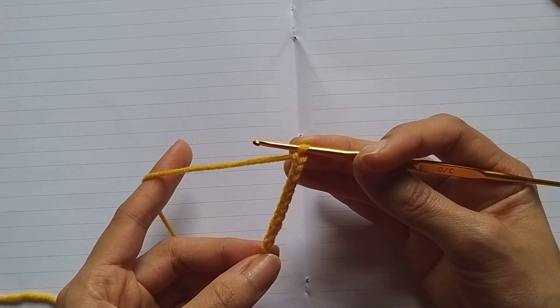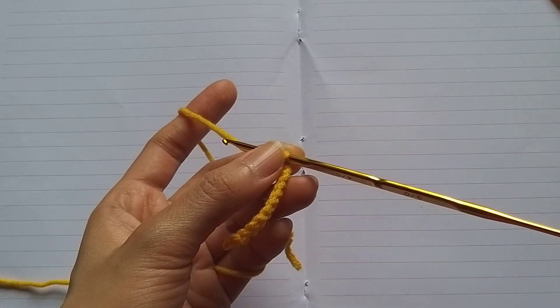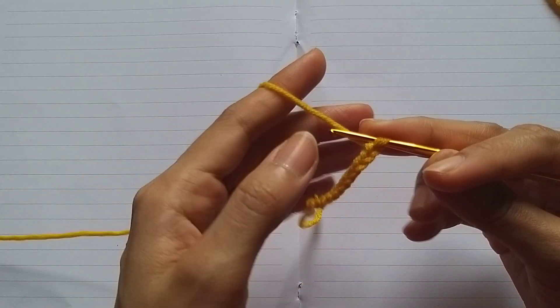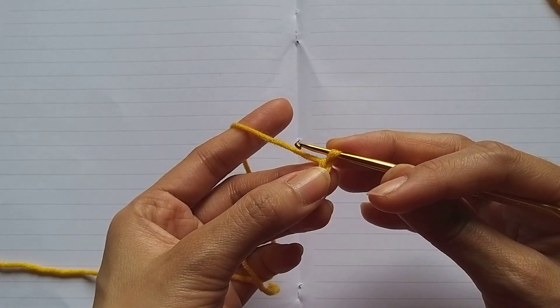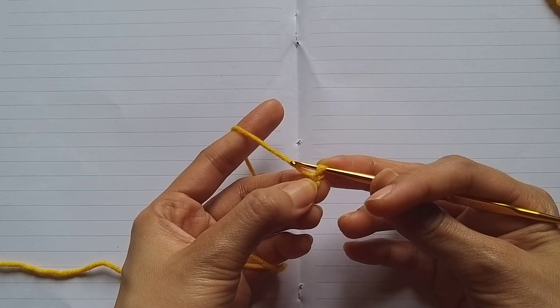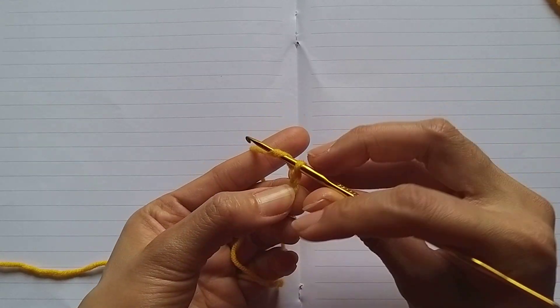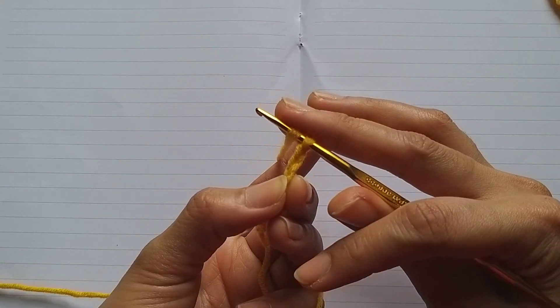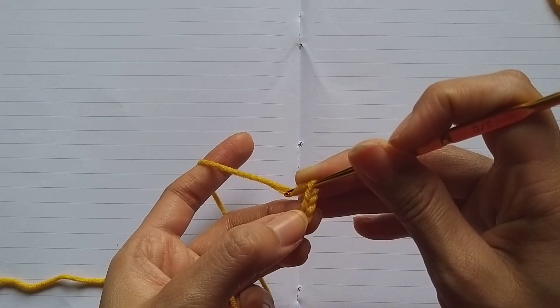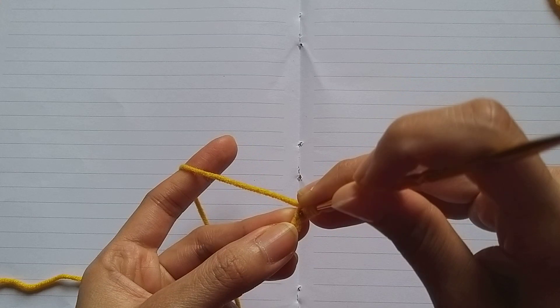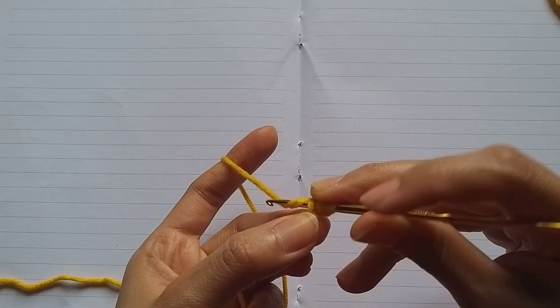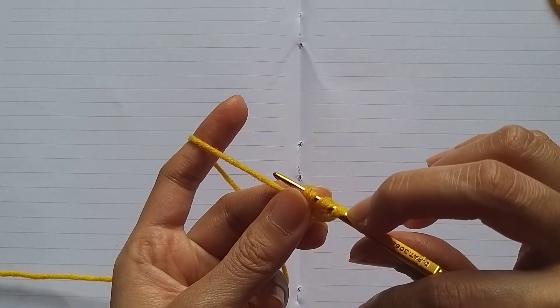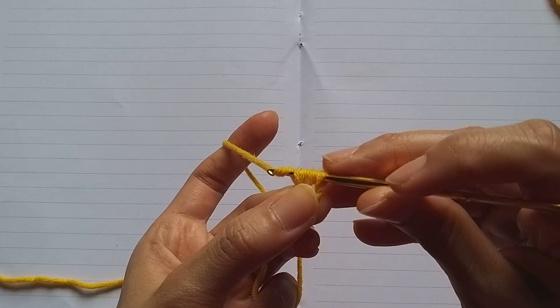Now the loop, pull it through, insert the hook here, wrap the yarn over, pull through. Continue this way, insert the hook, wrap the yarn, pull through.